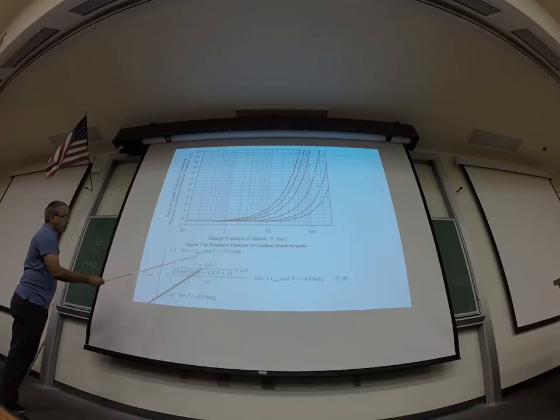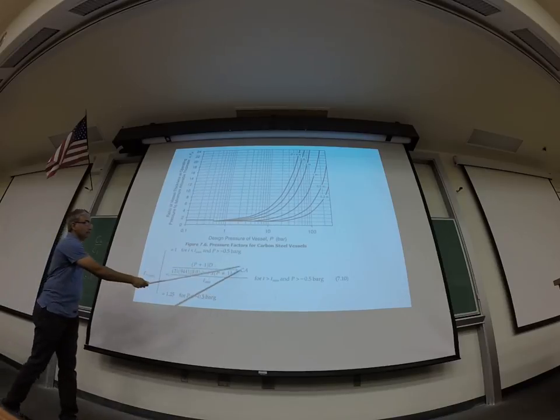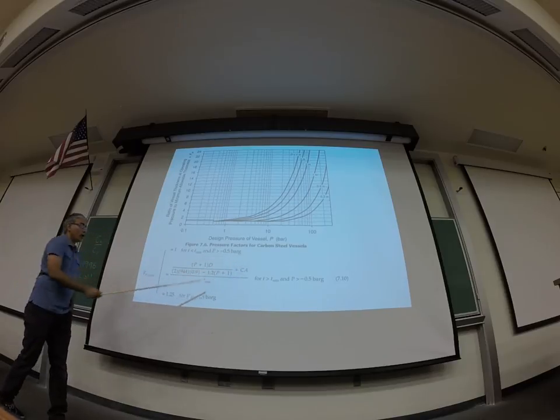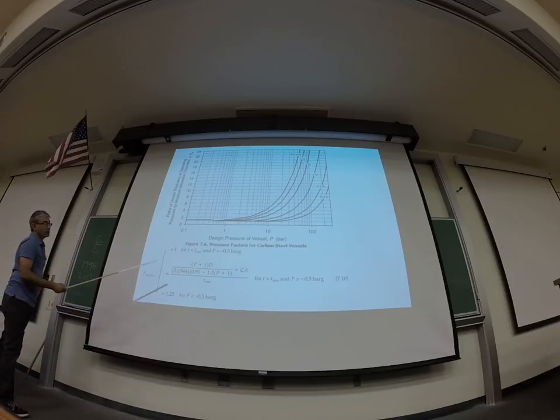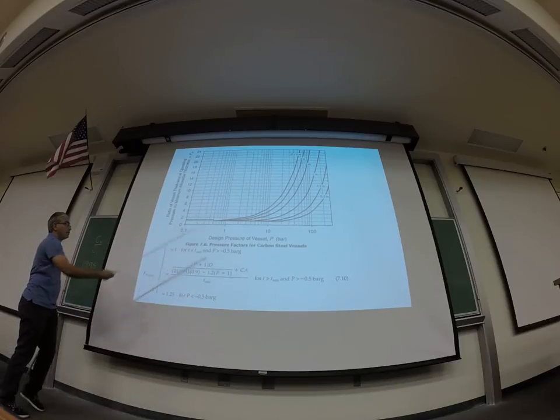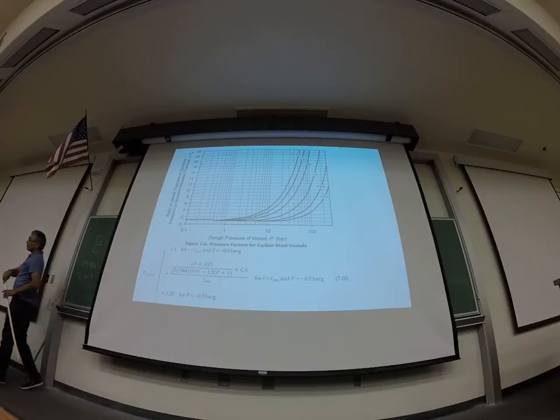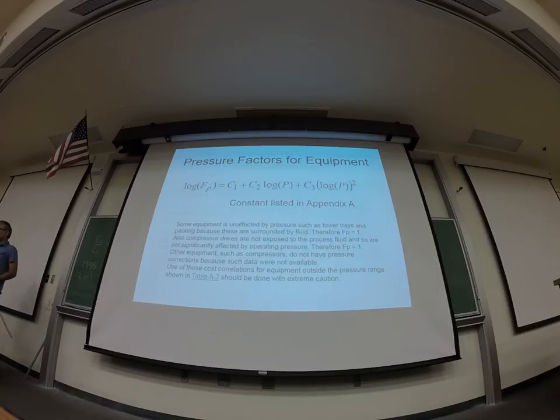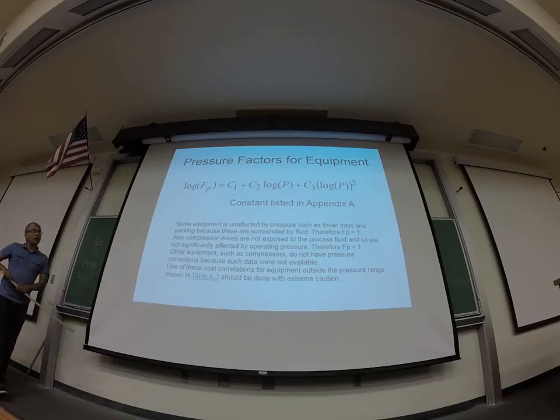So what is bar G? Almost zero. Almost zero, right? Okay. Yeah. So okay. So that's P in the bar G. And P here, again, is the pressure. D is the diameter. CA is what is called corrosion allowance. You always add an extra term to account for corrosion allowance. P is the pressure. T minimum is the minimum thickness. I already told you. So you can use this equation or this graph to figure out the pressure factor for pressure vessels.